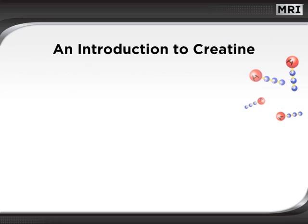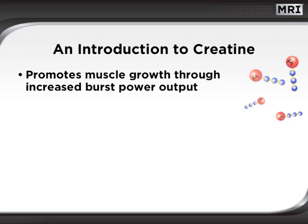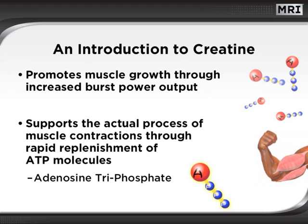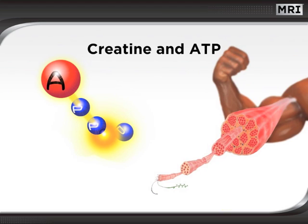Creatine is a naturally occurring molecule in the body. Its job is to help generate short burst energy for muscle contractions. It supports the actual process of muscle contractions through the rapid replenishment of ATP molecules. ATP stands for adenosine triphosphate, a high-energy molecule required to drive muscle activity. ATP is comprised of a special molecule called adenosine bound to three phosphate molecules by high-energy bonds.